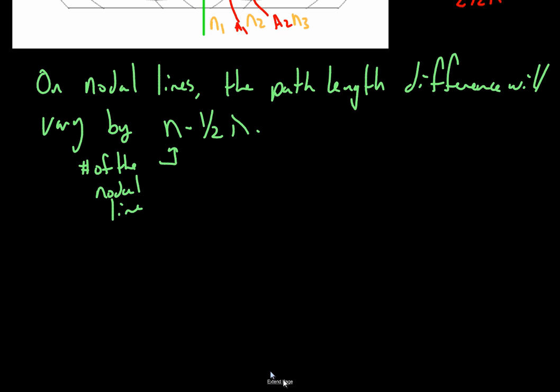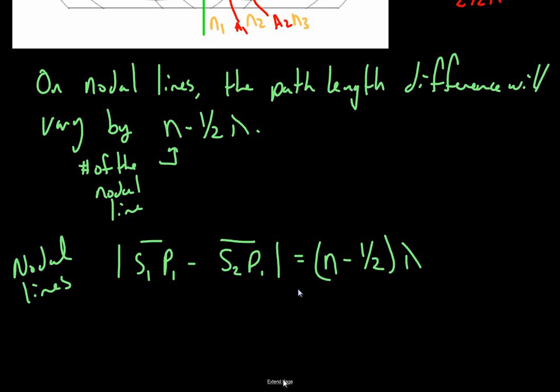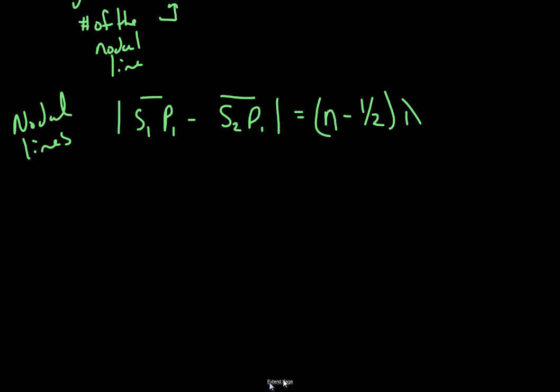And what that lends itself to is this generalized formula which says, the distance of the path length from S1P1 minus S2P1, it doesn't matter what order you put these in, that's irrelevant, equals N minus one-half wavelengths. And this is for nodal lines. You're not given a formula for antinodal lines because you're expected to understand that they differ by a whole number wavelength. You're only given this formula on your formula sheet. All right. Now let's put it to use.